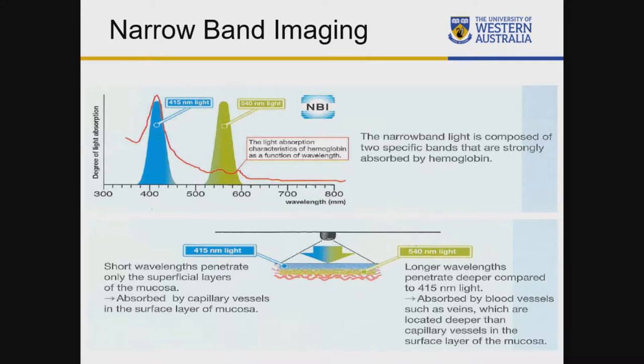We've been introduced to the concept of peak absorption of hemoglobin. With blood vessels come blood cells and the component of hemoglobin, which is why we have significant absorption of these two peak wavelengths. The longer wavelength — green at about 550 nm — penetrates a little deeper so you get to see underlying blood vessels in the context of veins, while the shorter blue wavelength is absorbed more superficially.